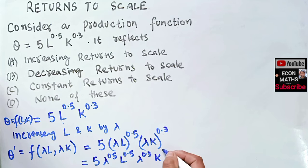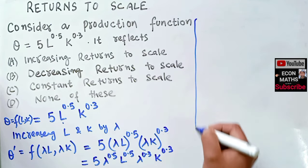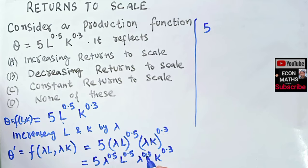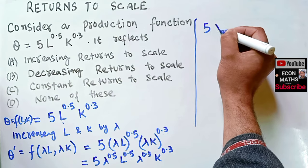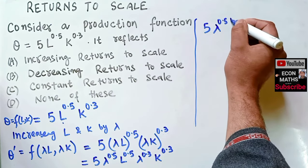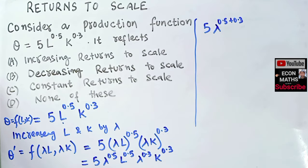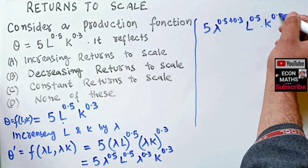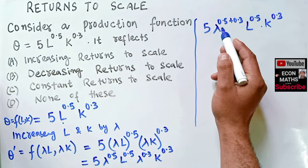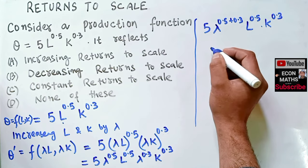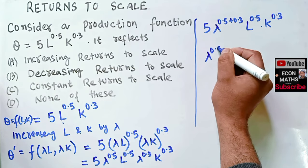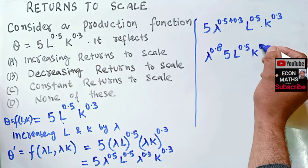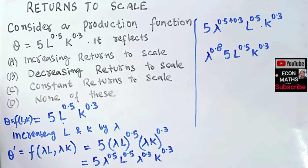Further manipulation gives us lambda^0.5 * lambda^0.3 * L^0.5 * K^0.3. Since the bases are the same, we can add up the exponents, so lambda^0.5 * lambda^0.3 becomes lambda^(0.5+0.3), which equals lambda^0.8. So we have lambda^0.8 * L^0.5 * K^0.3.